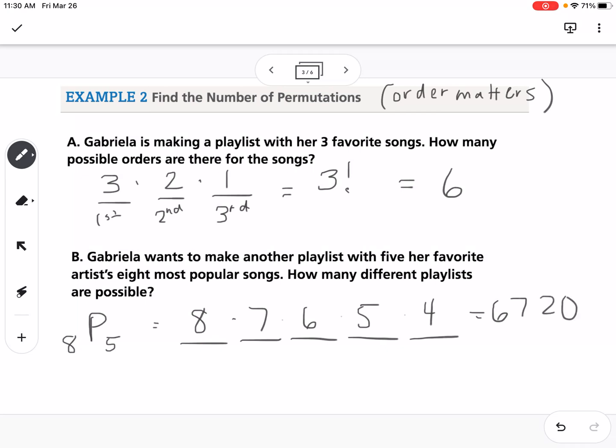Or there is a formula. The formula says we would take 8 factorial and divide it by 8 minus 5 factorial, or that would be 8 factorial over 3 factorial. We would also get 6,720.